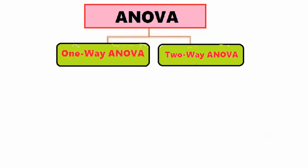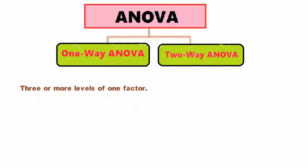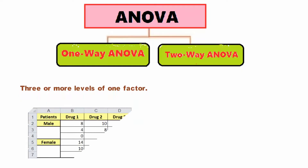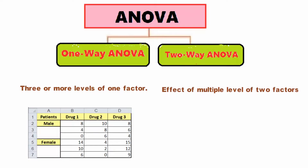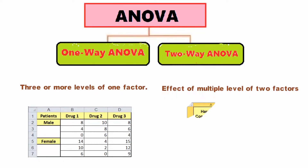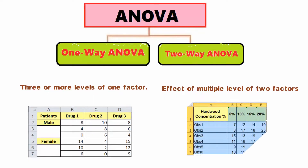Three — Compares: one-way ANOVA compares three or more levels or conditions of one factor. On the other hand, two-way ANOVA compares the effect of multiple levels of two factors.